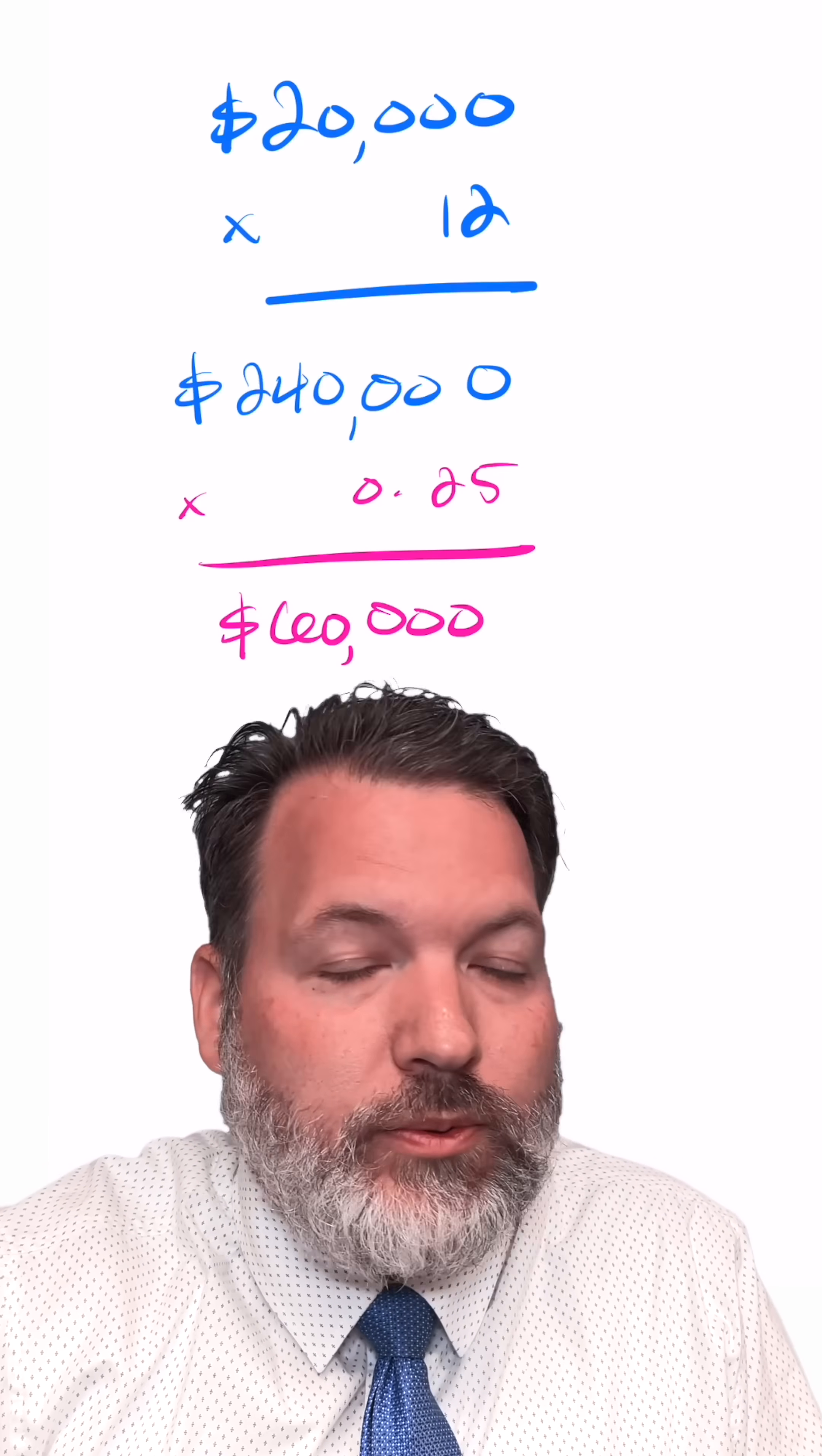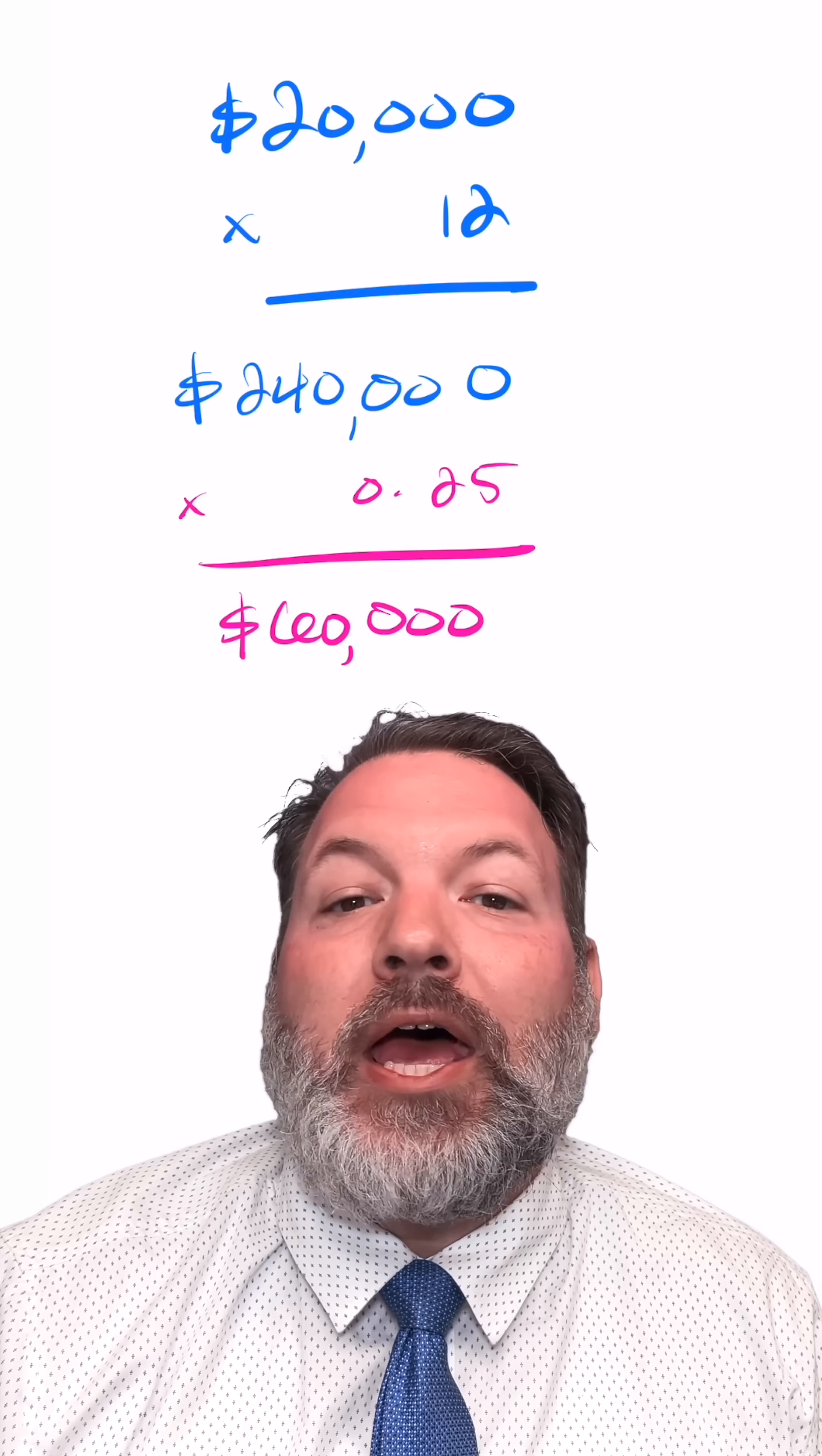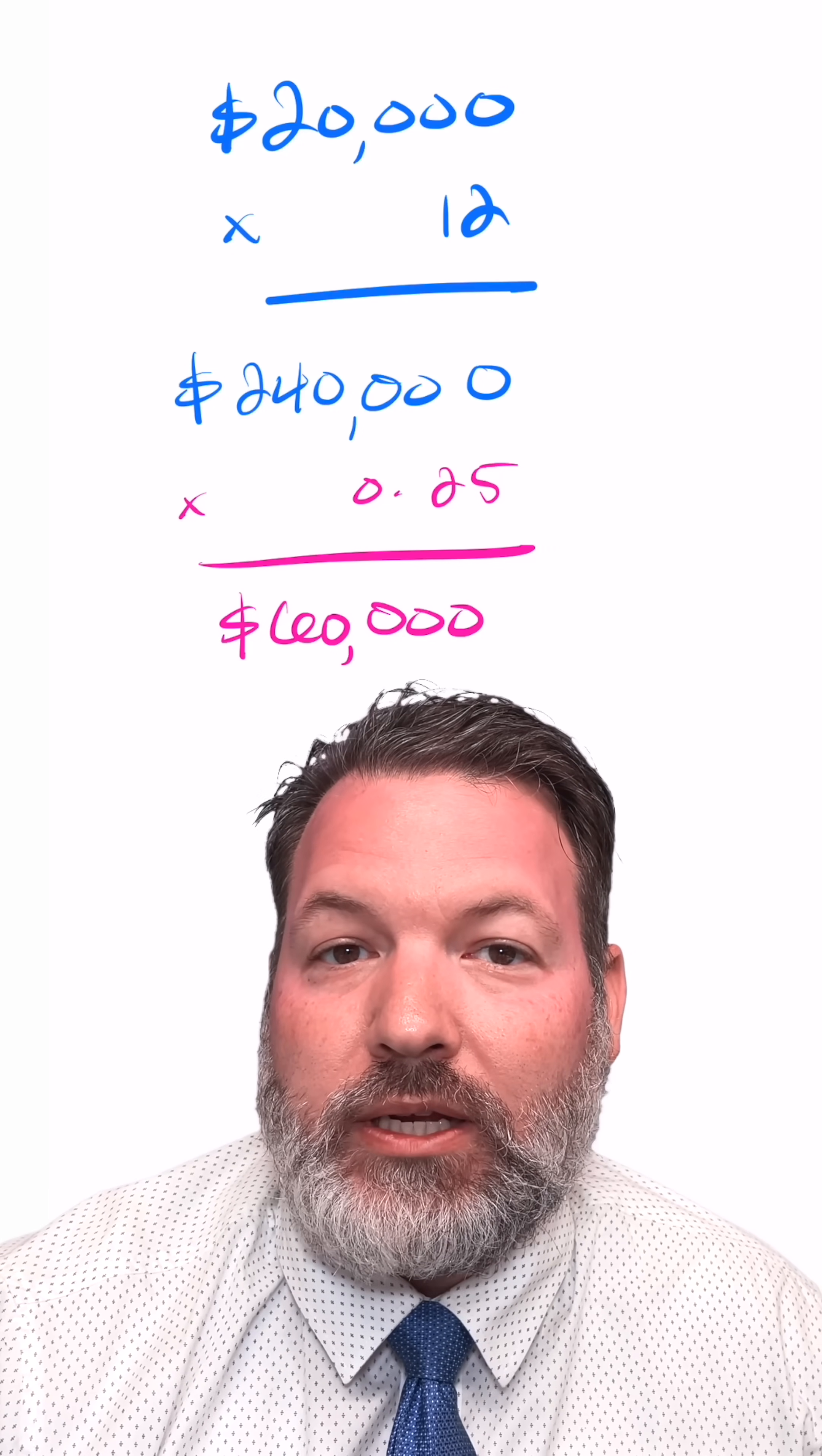If the bank agrees with you and thinks it's a good idea, they're going to say yes, but they're going to charge you a percentage for their trouble. You're going to have to pay back the $20,000 plus 10%, let's say. So you're paying $2,000 to get the loan, to get the business off the ground, to make $60,000 in a year.